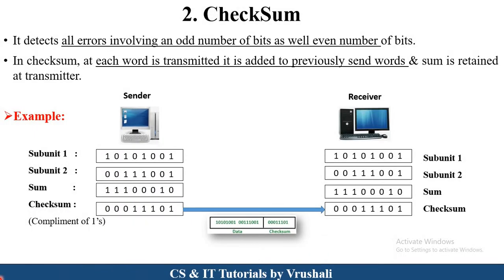The next method is checksum. Checksum is a more advanced method than parity bits. Suppose the sender sends a particular message to the receiver. There is subunit 1, which represents previous information already sent to the receiver, and subunit 2, which is the recent or current information the sender wants to send. Checksum performs addition of the previous data sent and the current data sent.